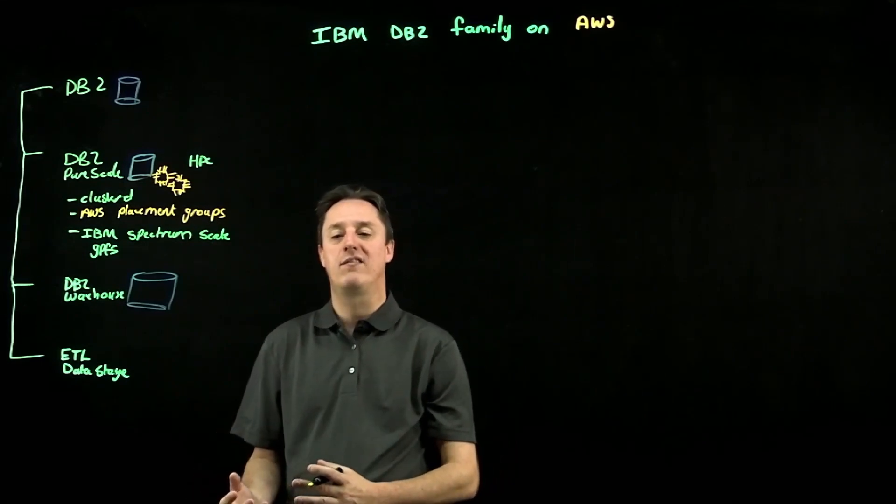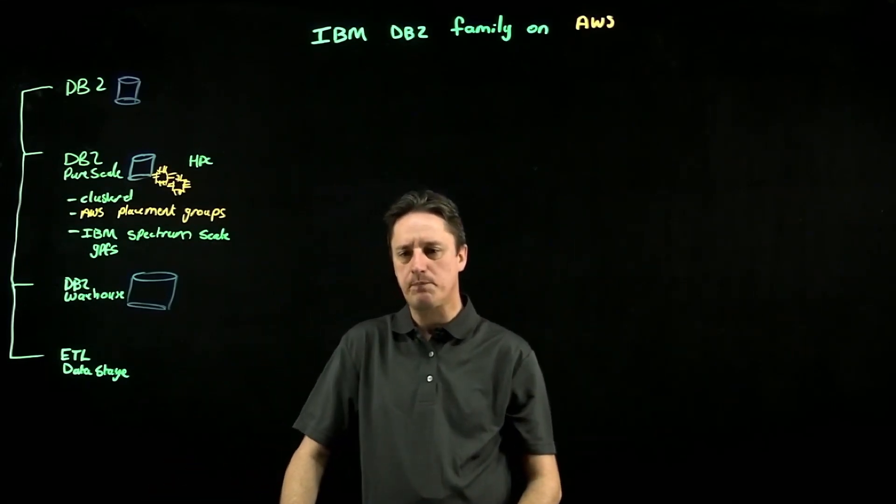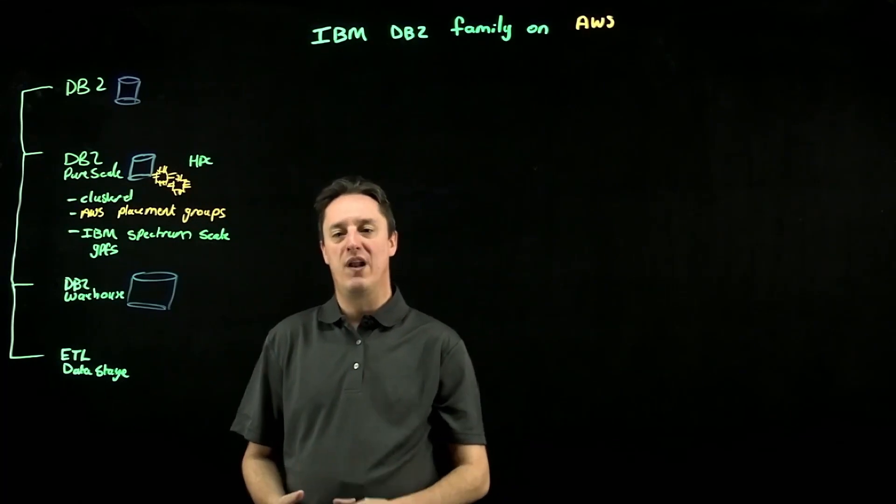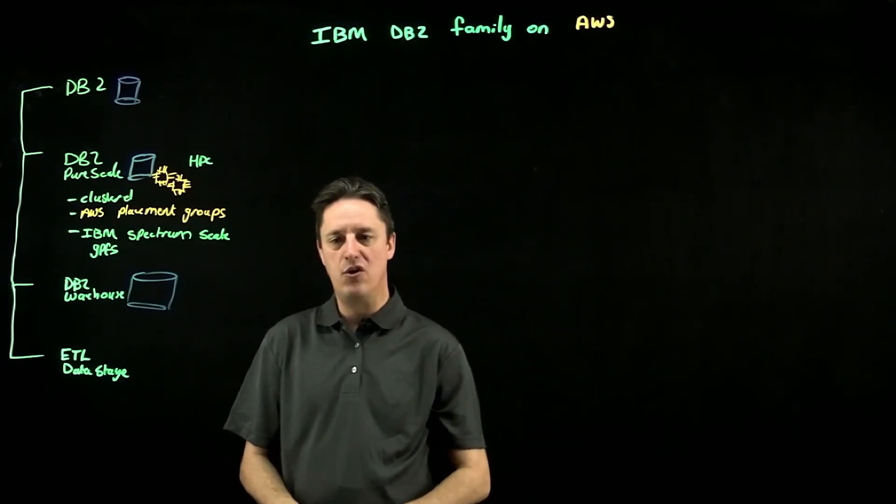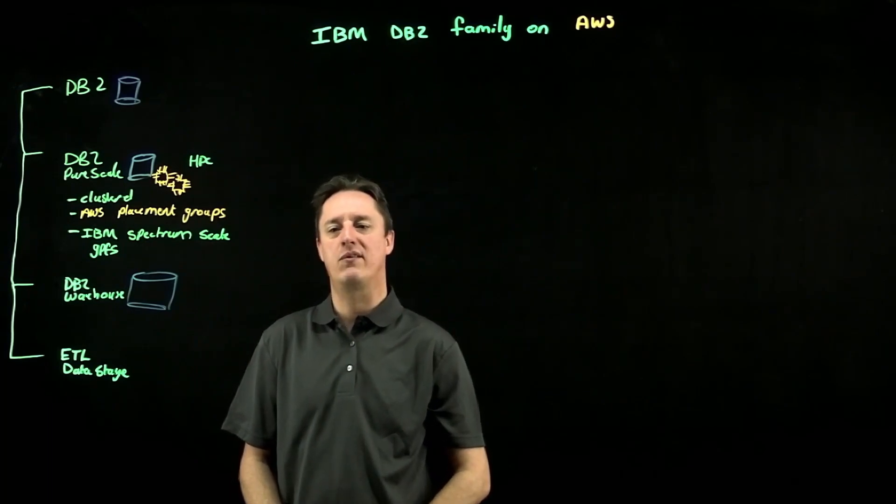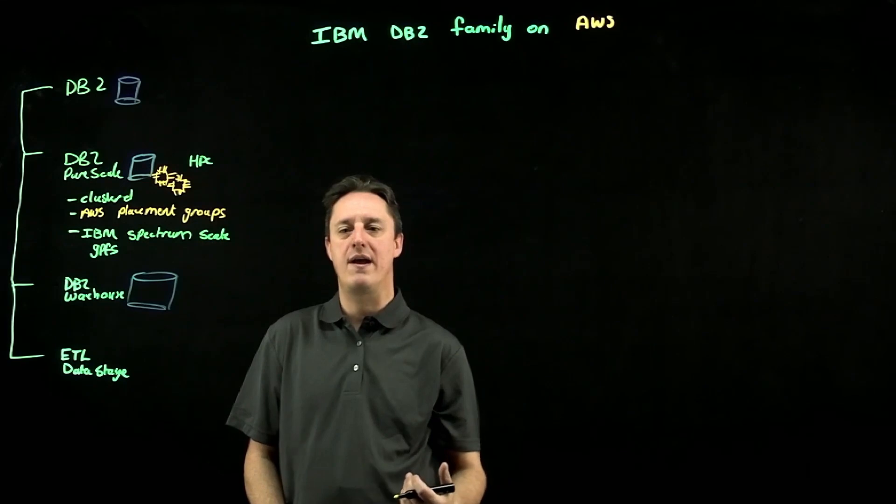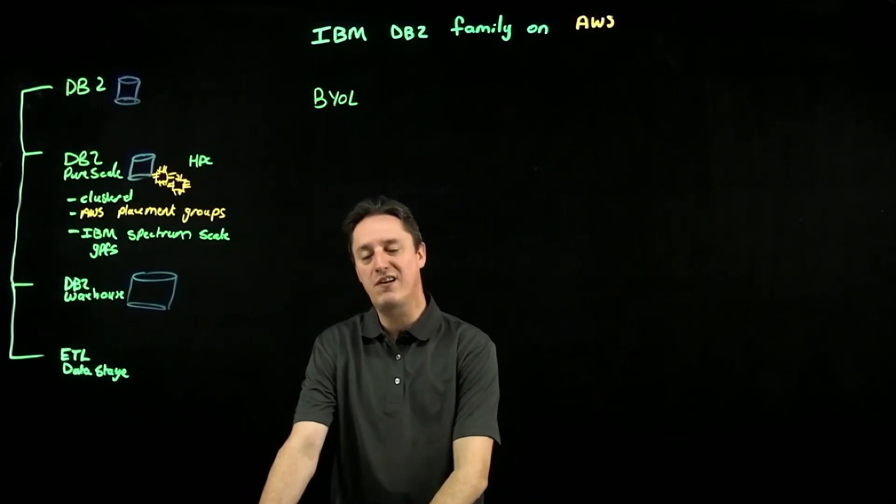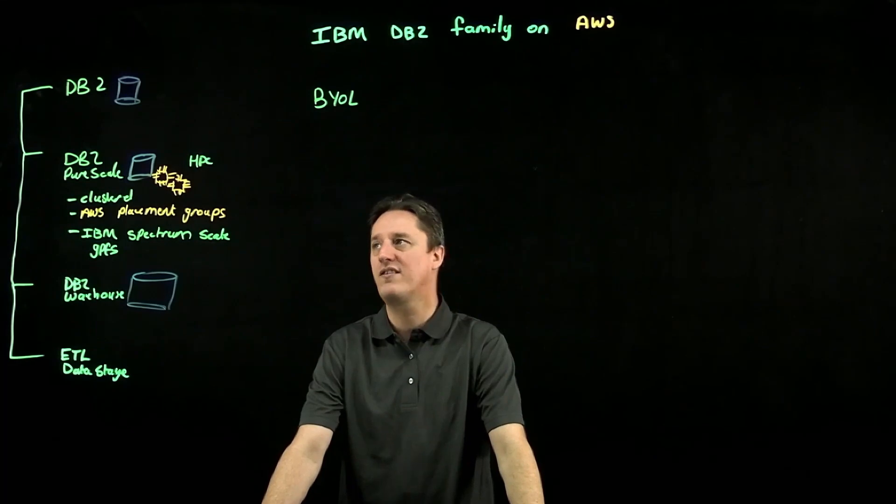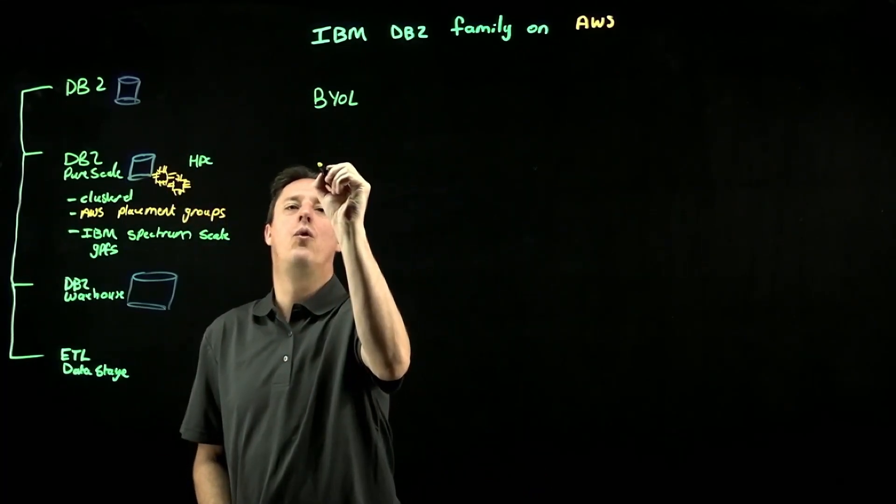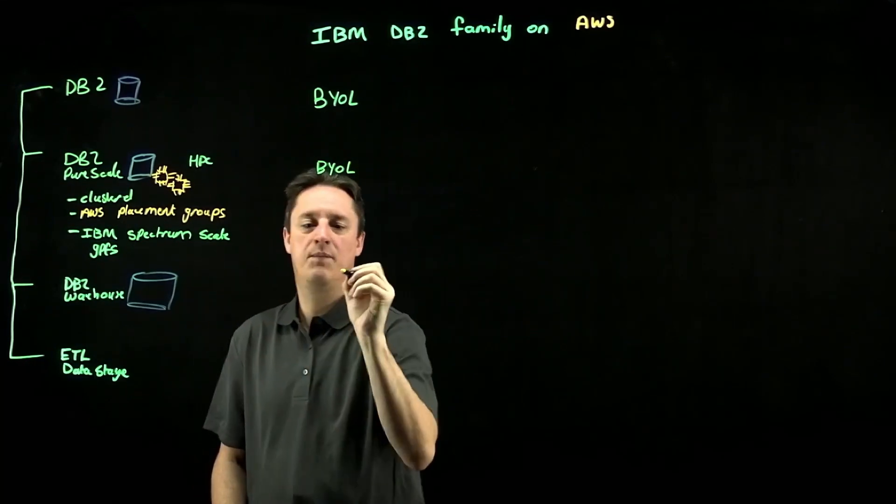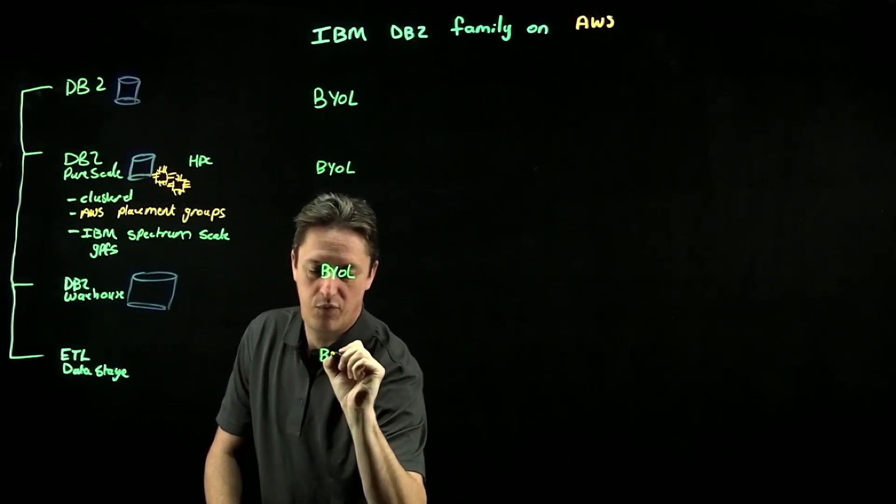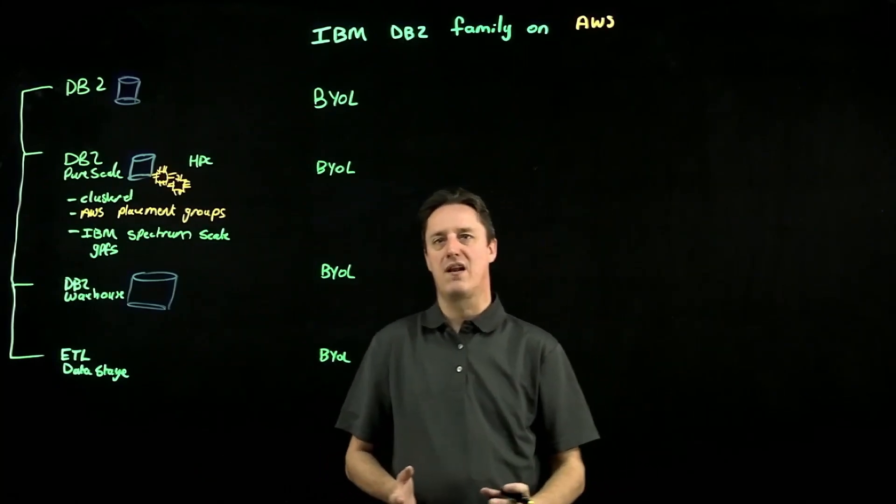So when we take these existing investments and bring them to AWS, what options do customers have? We've got quite a few. For one thing, all of IBM's software licenses can be run on AWS. You can take your existing licensing structure that you're using on-premises and deploy that workload on AWS. So we have a bring-your-own-license option where a customer can take their existing licensing investments and run them on top of AWS. This exists for DB2, for PureScale, for DB2 Warehouse, and for Data Stage.